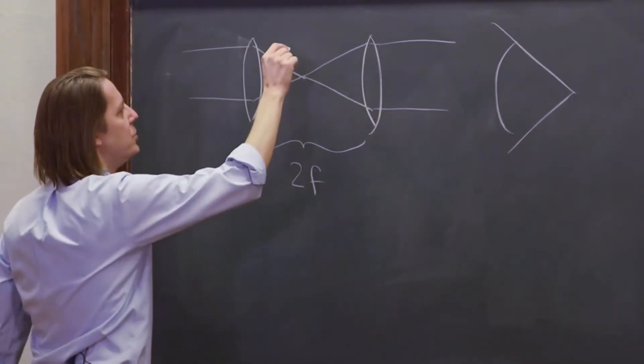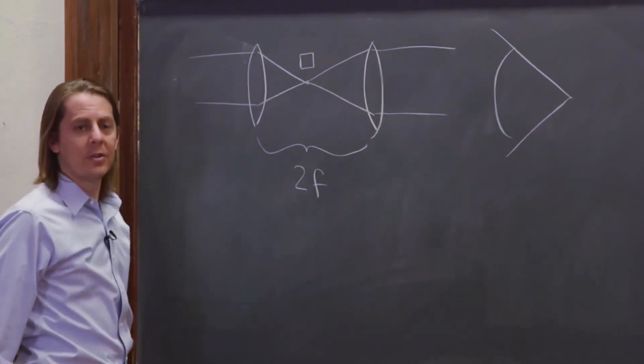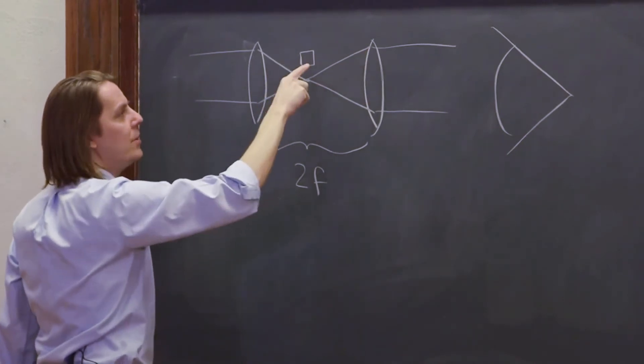In some sense this is a cloak because you can now put an object here and it won't have any effect. All the rays hitting the lens go down, meet here, come back out, and miss the object.